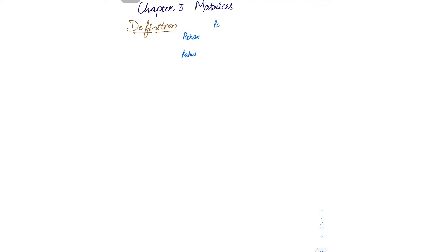For example, there are two friends Rohan and Rahul. Rohan has 5 pens and Rahul has 8 pens. Rohan has 6 pencils and Rahul has 7 pencils. Rohan has 2 notebooks and Rahul has 3 notebooks. If we write it in the form of rows and columns inside square brackets, this will be converted into the form of a matrix.